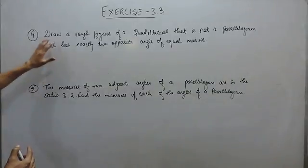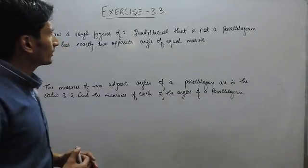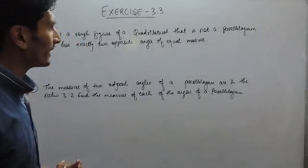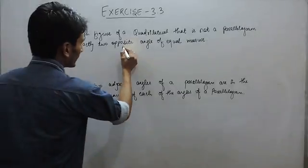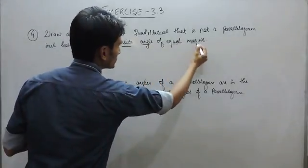In question number 4, you have to draw a figure of a quadrilateral that is not a parallelogram but has exactly two opposite angles of equal measures.